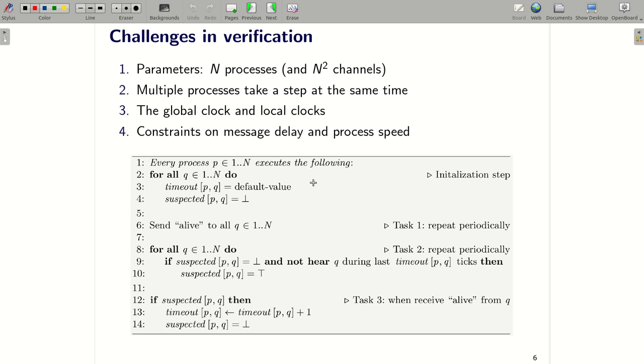And now I explain to you why the failure detector is challenging to verify. The first reason is that this algorithm is parameterized by the number of processes. Here we have n processes and n-square channels. So we need to verify infinitely many instances. Second, multiple processes can take a step at the same time. Third, there exists a global clock and every process has its own local clock. So if we naively encode the global clock as an integer number counter, its value keeps increasing.